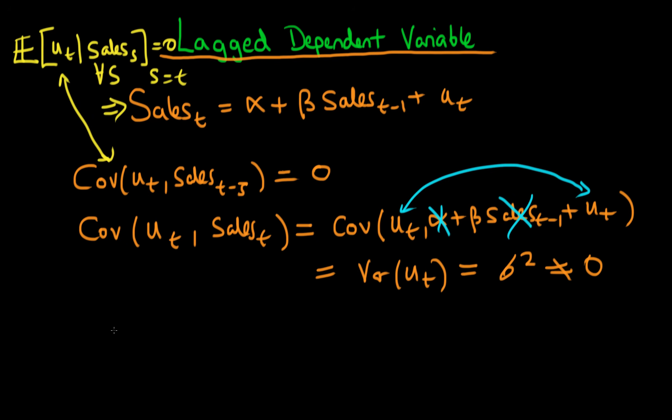So we've actually got a violation of the strict exogeneity assumption for the case when we have a lagged dependent variable, because we have that the expectation of ut given sales at time t doesn't equal 0.